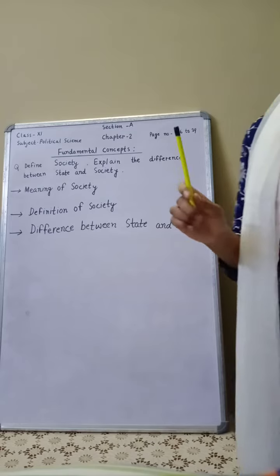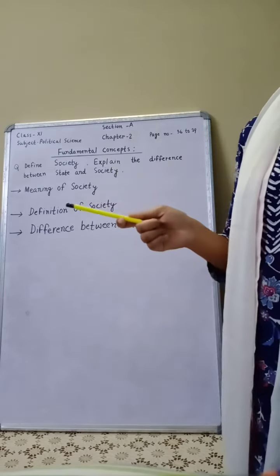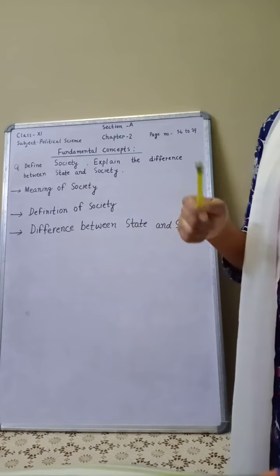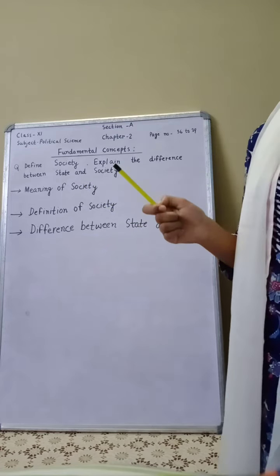And second point is, government is the agency of the state. On the other hand, society has no formal and organized agency.